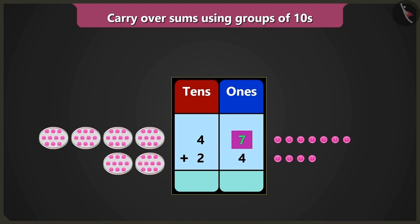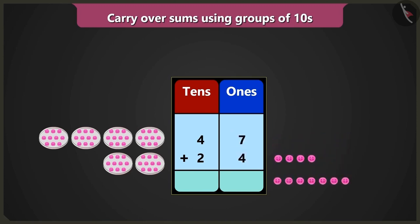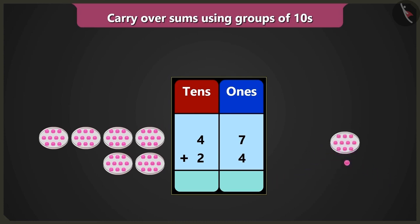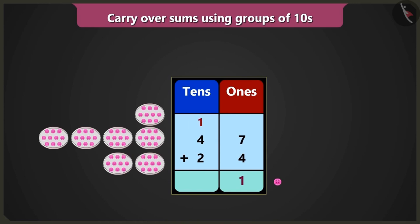Now in the box of ones, when 7 ones are added to 4 ones, we count after 7: 8, 9, 10 and 11. That means there is 1 ten and 1 one. Now write 1 in the ones place and 1 ten in the box of tens right on top in small letters, thus carry over 1 ten.